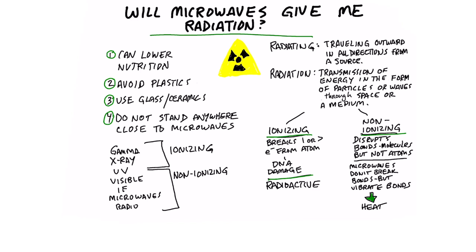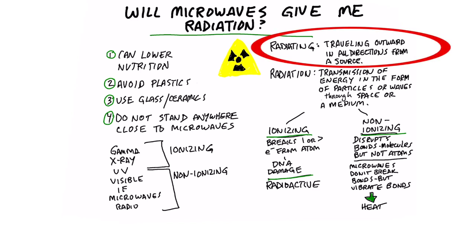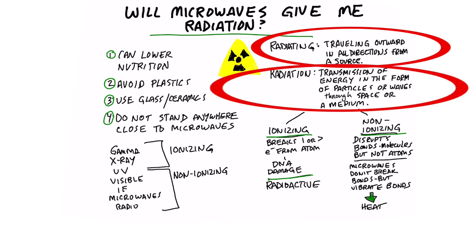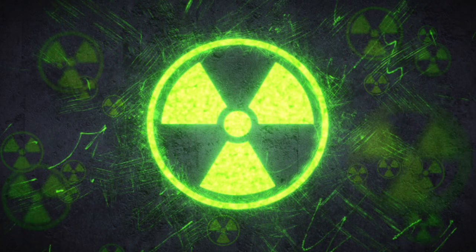The definition of radiating means traveling outward in all directions from a source. Then we have radiation, which is the transmission of energy in the form of particles or waves through space or a medium like food, a body, or even a wall. Some people have this consideration that if they microwave the food it's going to be now radioactive in some way.